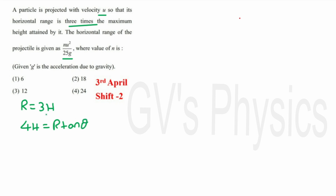We substitute the value for range: 4h = 3h·tanθ. Here h and h get cancelled. The balance gives tanθ = 4/3. So now we have to find the angle corresponding to tanθ = 4/3, and instead of deriving it we can use a short method.